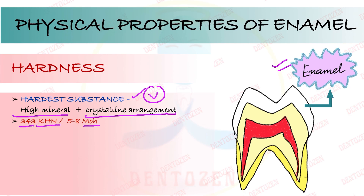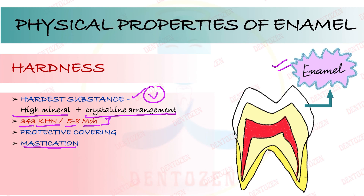Because of its hardness, enamel protects the tooth crown — it forms a protective covering. But its most important function, the chief function of enamel, is mastication — it helps in chewing food. However, because of its structure and hardness, it is also brittle, meaning it can fracture easily.